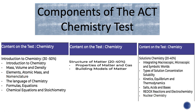Further details on the components of the chemistry exam include the following. The introduction to chemistry unit, which is worth 30 to 50% of the overall grade, assesses the following key ideas: introduction to chemistry, mass, volume, and density, elements, atomic mass, and nomenclature, the language of chemistry, formulas, equations, and finally, chemical equations and stoichiometry.